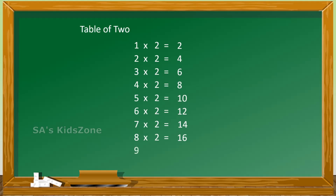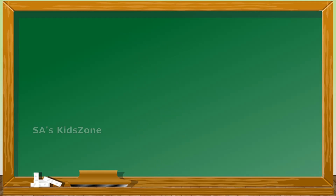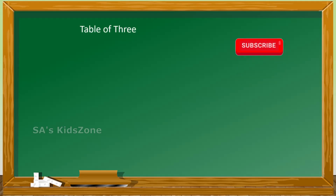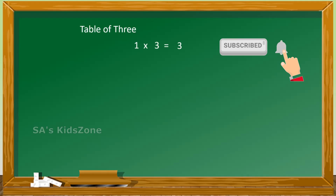9 twos are 18, 10 twos are 20. The next is table of 3: 1 three is 3, 2 threes are 6.